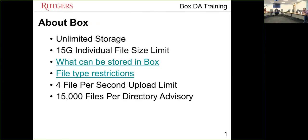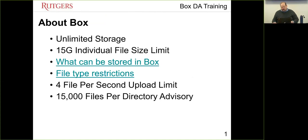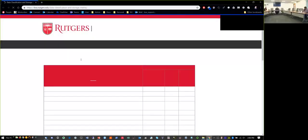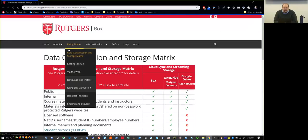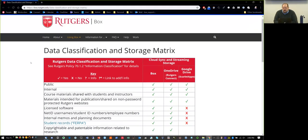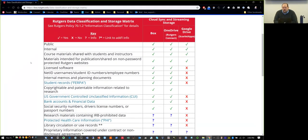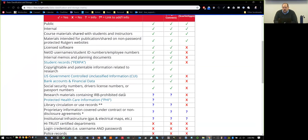Brief overview about Box: this is unlimited storage. Someone asked yesterday what unlimited means — so far no other university has gotten any pushback from Box about how much space they're using. If you're looking for information on what can be stored in Box, go to the Box website. Under 'Using Box,' the data classification matrix is available and details exactly what can and cannot be stored.